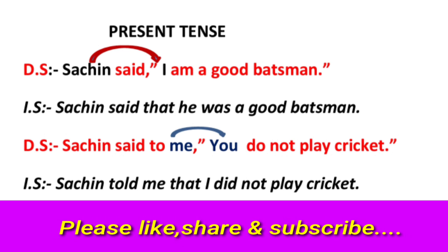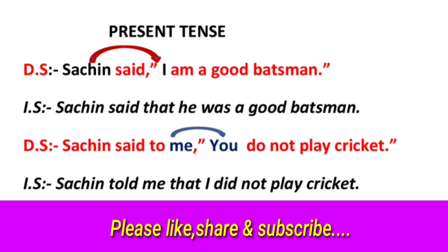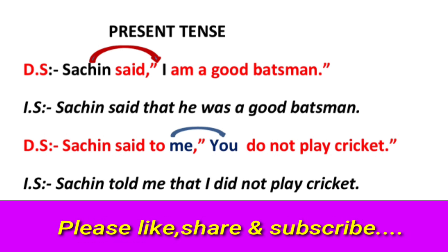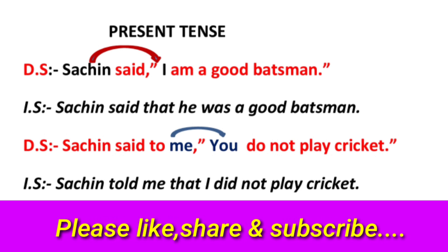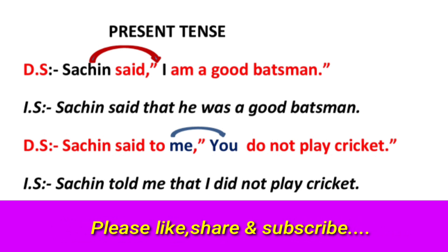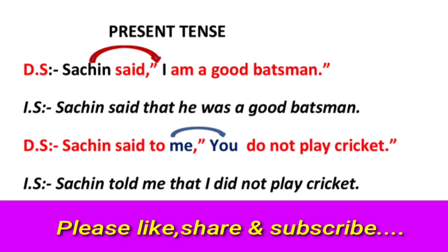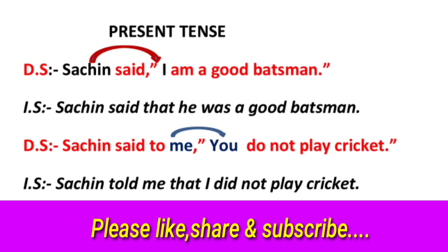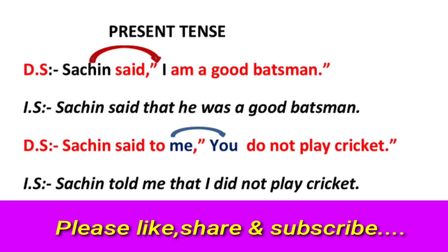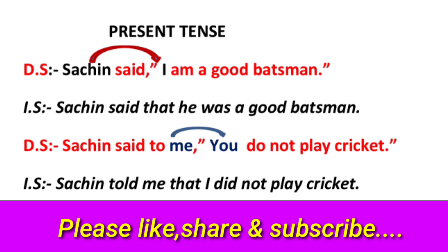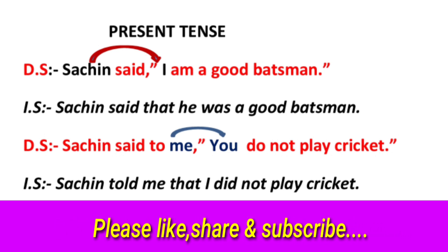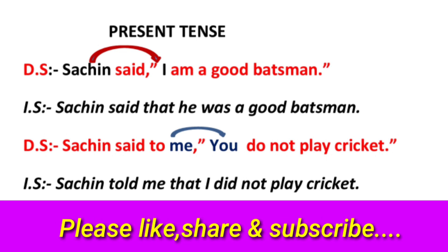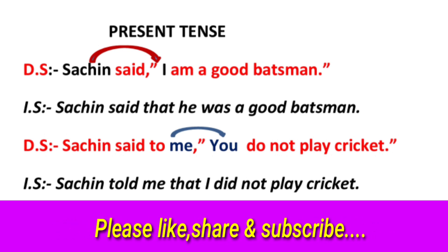Another example: Sachin said to me, 'You do not play cricket.' Answer: 'Sachin told me that I did not play cricket.' 'Me' is equal to 'you', so it changes to 'I'. Present changes into past. And 'said to' changes into 'told'.